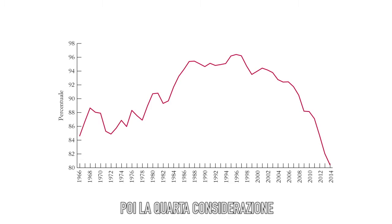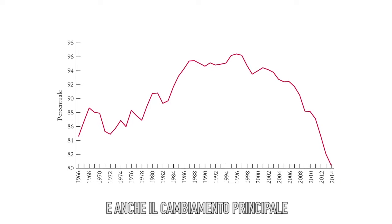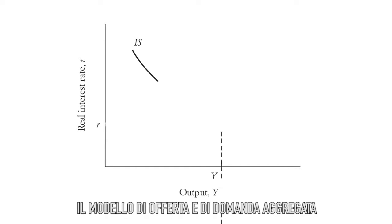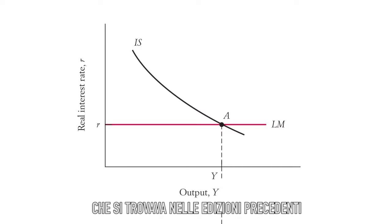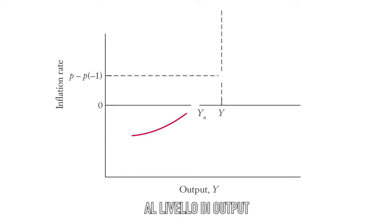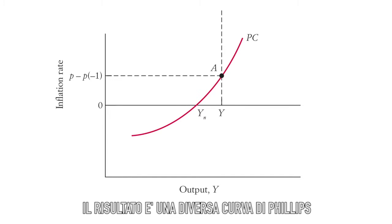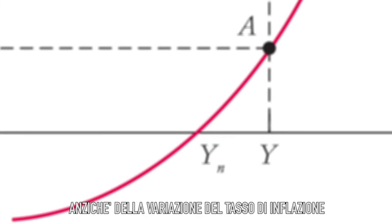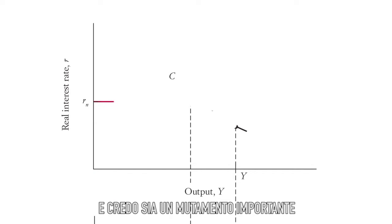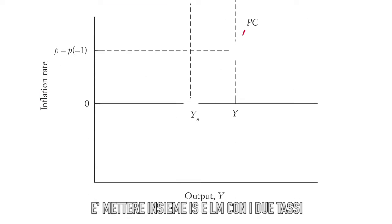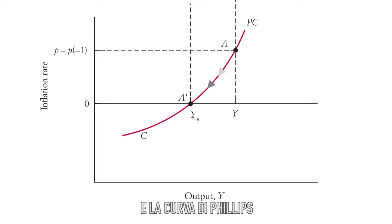The fourth major change is to get rid of the aggregate supply–aggregate demand model that was in the previous editions. What I have done is eliminated it and replaced it with the Phillips curve, showing the relation of inflation to the level of output. The result is a Phillips curve which makes the inflation rate a function of the output gap rather than the change in the inflation rate. So the book puts together the IS, the LM with the two rates — one in the IS, one in the LM — and the Phillips curve.